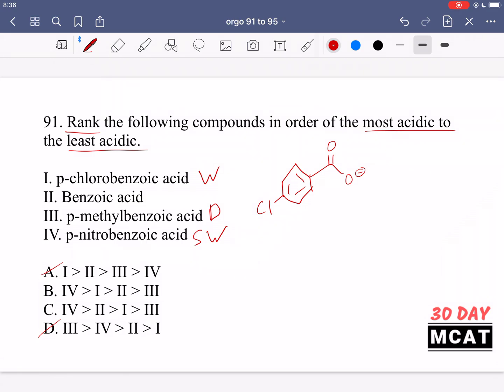We're choosing between B and C. Option three is the least acidic because it has a donating group. Number two is normal benzoic acid - more acidic than the methyl but less acidic than the chloride. B is our correct answer: number four is most acidic, then chloro, then normal benzoic acid, then number three is least acidic.